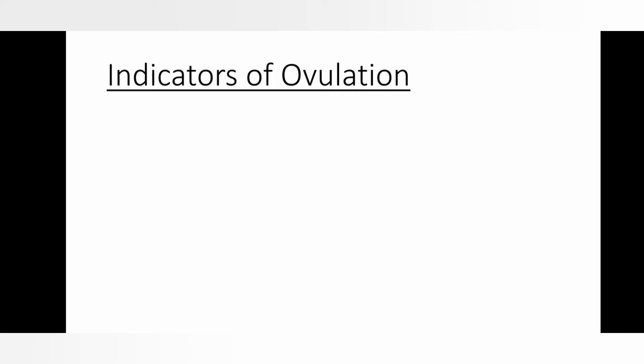Before starting the indicators of ovulation, I want all of you to know what ovulation actually is. Ovulation is defined as the process of release of ovum or oocyte from the ovary by the rupturing of the Graafian follicle due to the LH surge. Very important point to remember: ovulation occurs due to LH surge.